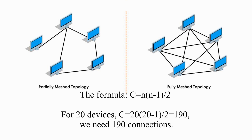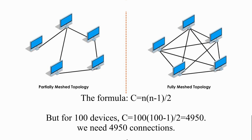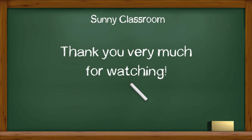Not too bad. For 20 devices, we need 190 connections — still manageable. But for 100 devices, we need 4,950 connections. It would be too expensive and extremely impractical. In our real world, no one will do this, except governments and people with a lot of money. I hope this video is helpful.